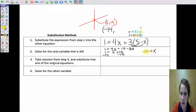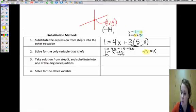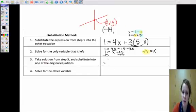If you're noticing, this equation is going to be much easier to plug it into. I would rather take 5 minus a negative 14 than solve for y if I have 1 equals 4 times a negative 14 plus 3y. That's going to be a lot more work. But you can do either and get the same answer.